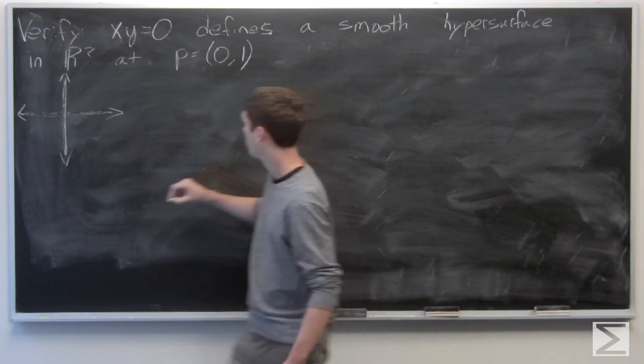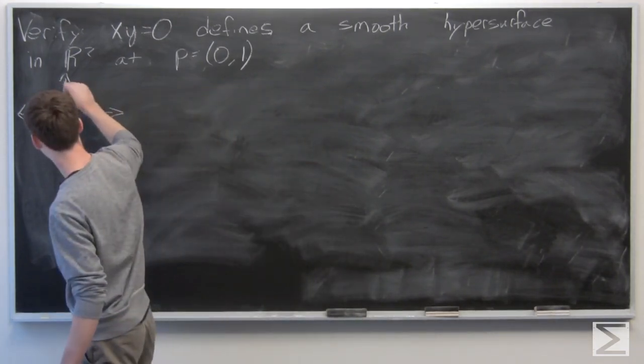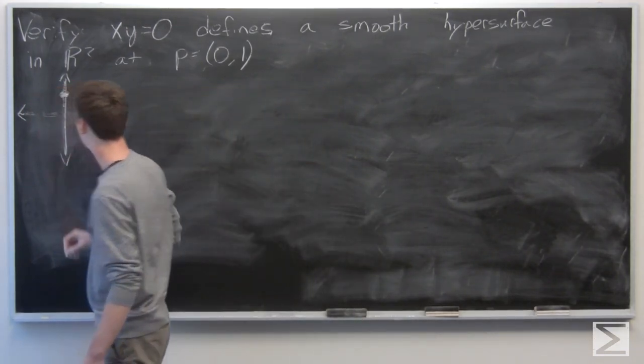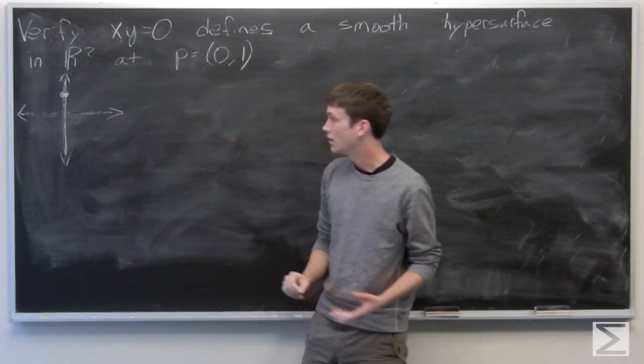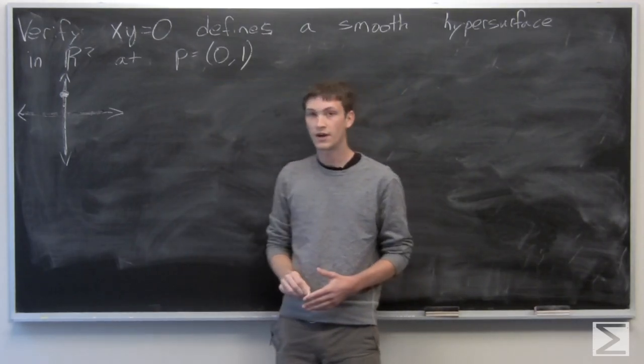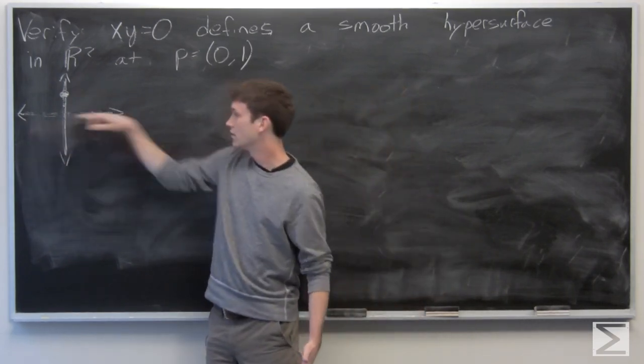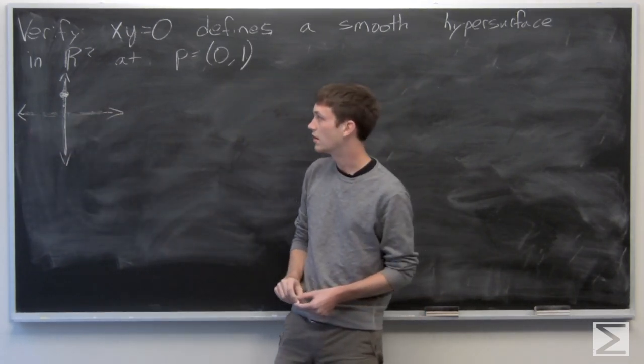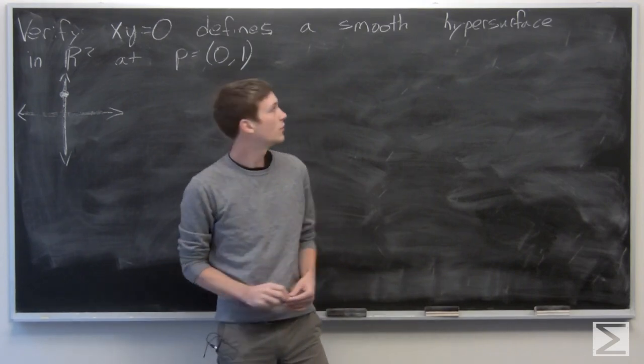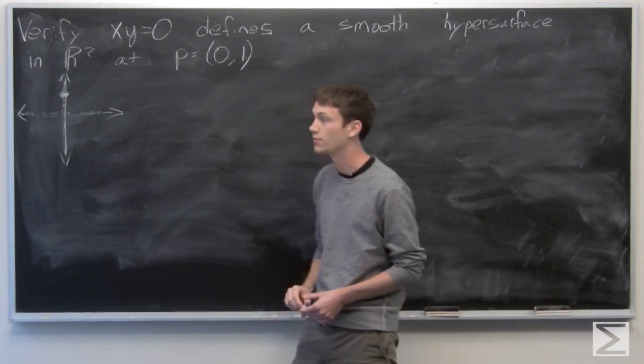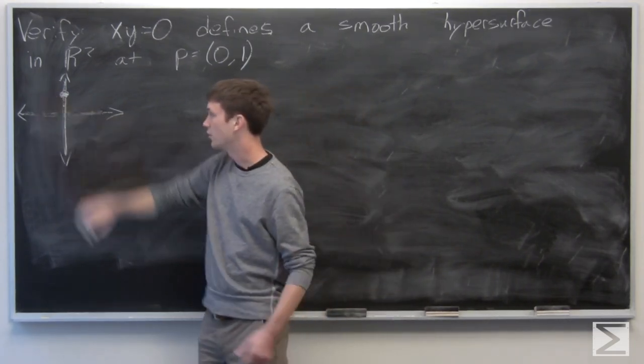And our point p is at 0, 1. And so we want to verify that xy equals 0, the two axes, creates a smooth hypersurface in R2 around this point.